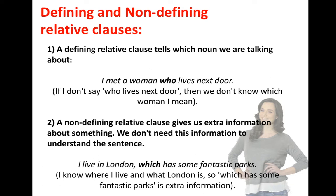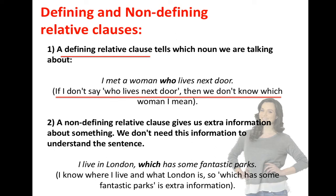Let's see the difference between defining and non-defining relative clauses. A defining relative clause tells us which noun we are talking about. For example: 'I met a woman who lives next door.' If I don't say 'who lives next door,' then we don't know which woman I mean. Defining relative clauses give us essential, necessary information.